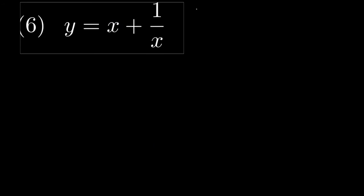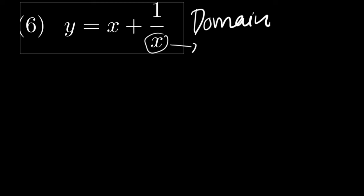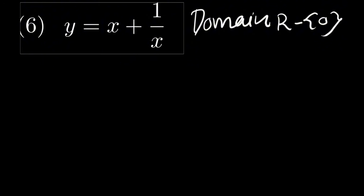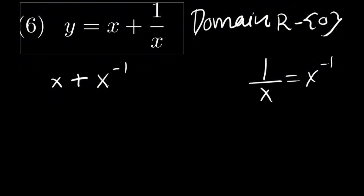To find the critical points for the next question, we start by finding the domain. Because we have a fraction, we take the denominator and make it not equal to zero, so x is not equal to zero. Our domain is everywhere except zero. After finding the domain, we derive the function. The term 1 over x is the same as writing x to the power of negative 1, so the function is x plus x to the power of negative 1.